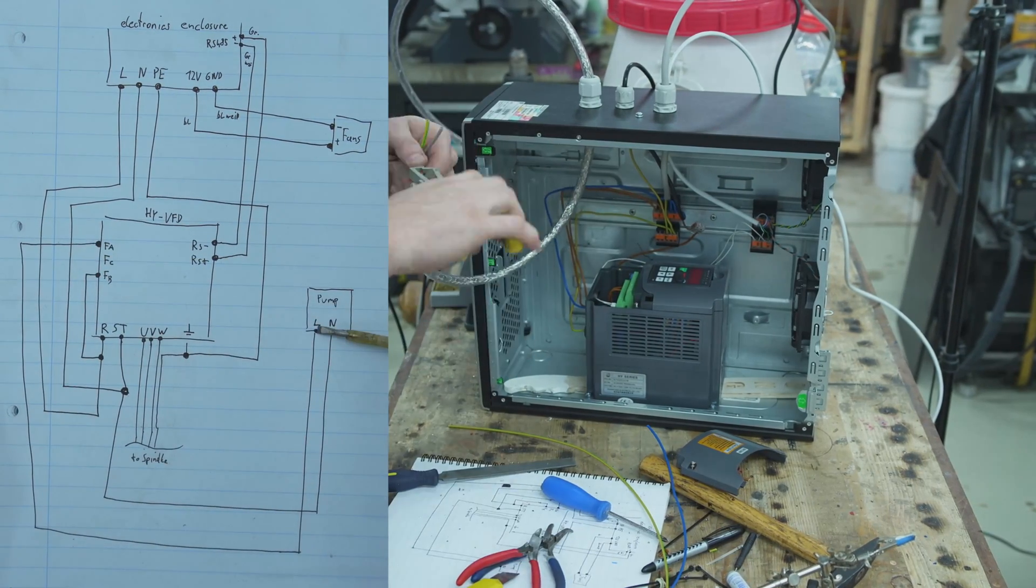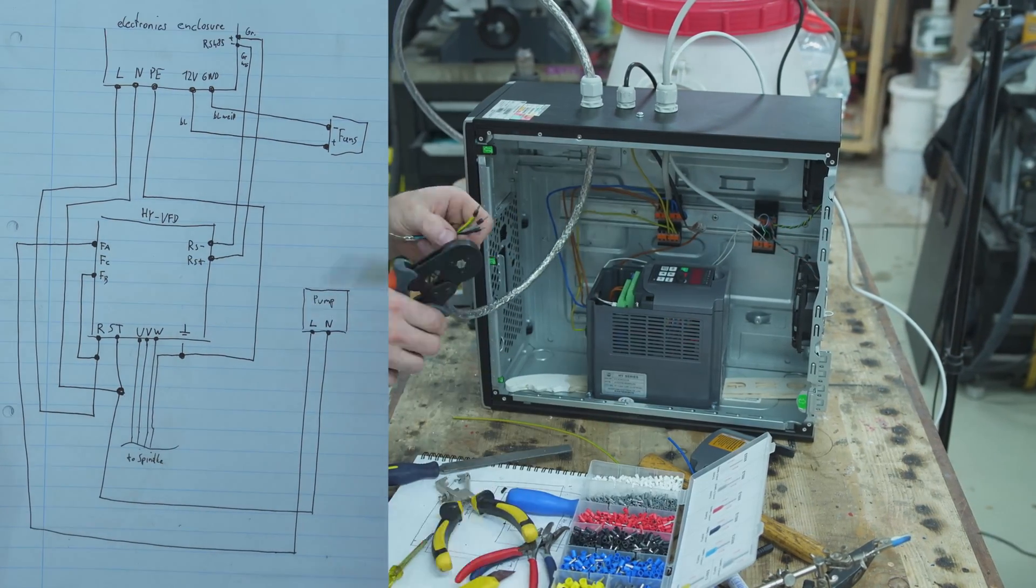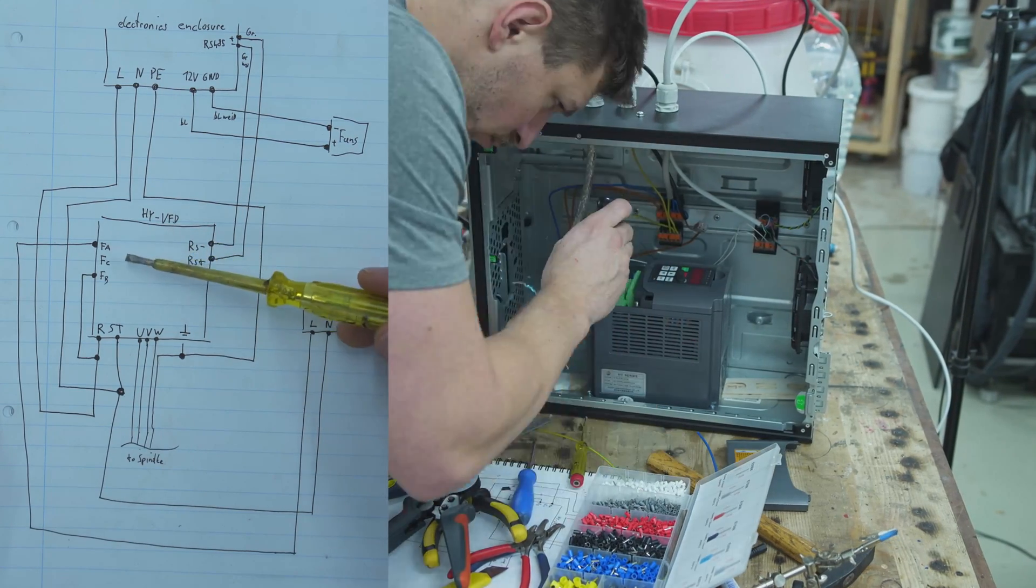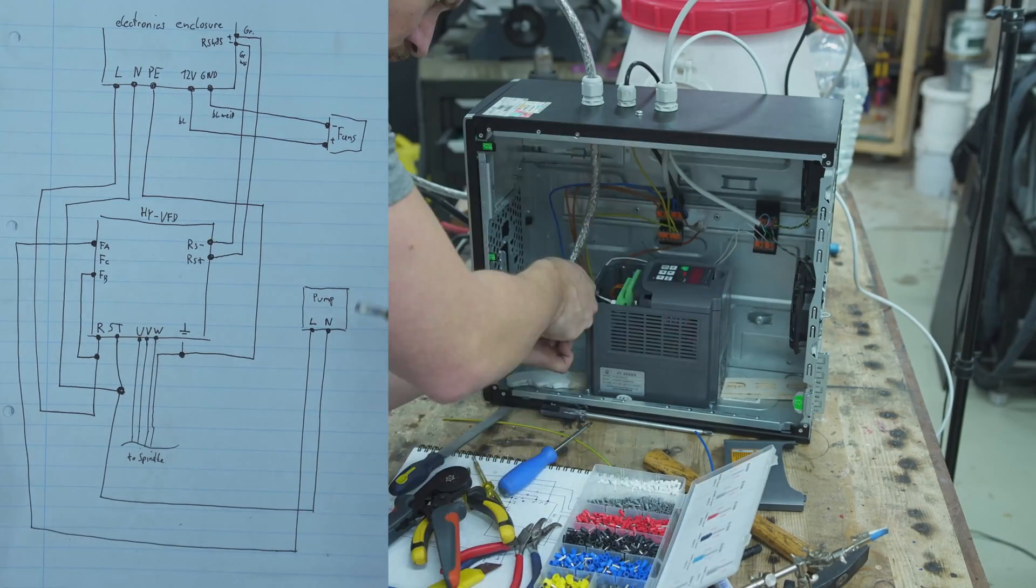And then you take the FA input and wire it to the phase input on your water pump. The VFD will internally connect FA to FB when you switch on the spindle. So also the water pump is therefore switched on.